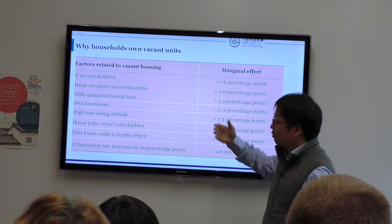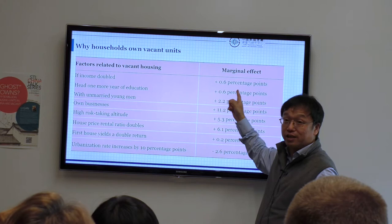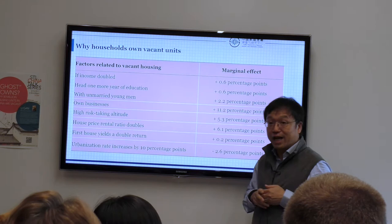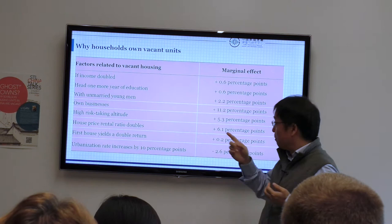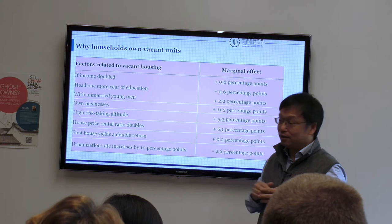If income doubled — a richer household — controlling for everything else, this marginal effect gives you a higher probability of having a vacant house. We believe it's also used as collateral for loans: if you own a business you have a much higher vacancy rate. So it's related to utility purpose, culture, and investment purpose.